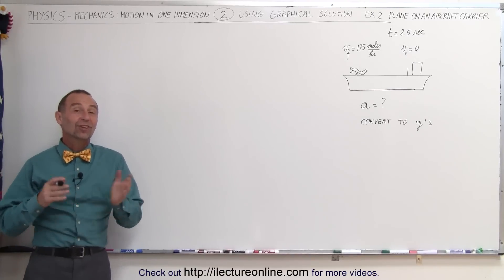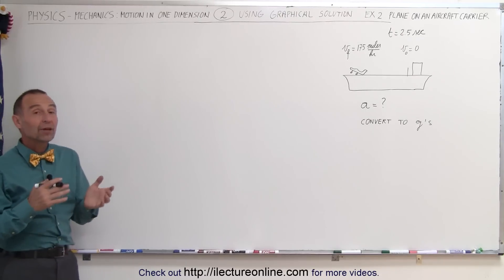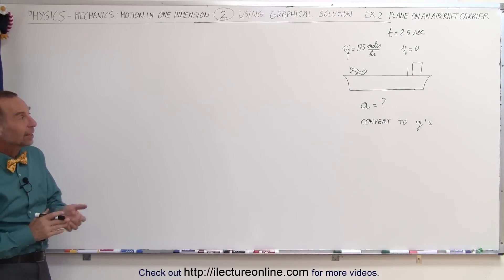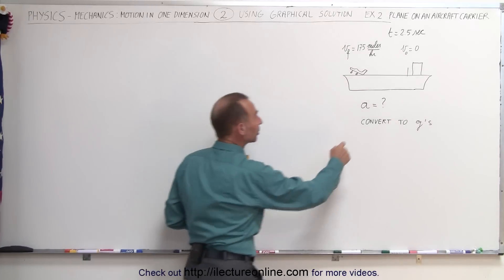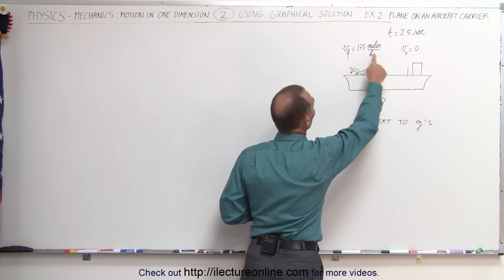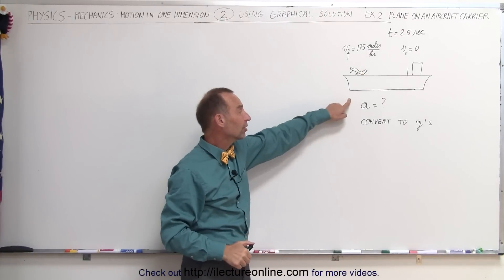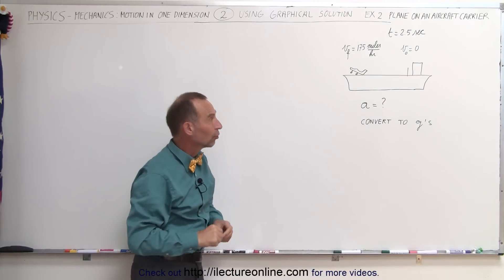Welcome to Electronline. Here's a second example of how to solve a one-dimensional motion problem using the graphical technique. Here we have an airplane taking off from an aircraft carrier going from zero to 175 miles per hour in 2.5 seconds. What is acceleration? And let's convert the answer to G's as well.